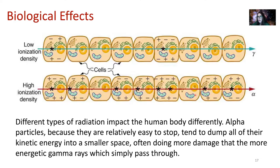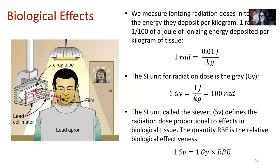Alpha particles can actually do more damage to human tissue than gamma particles. In the medical community, ionizing radiation doses are measured in terms of the energy they deposit per kilogram. One rad is one one-hundredth of a joule of ionizing energy deposited per kilogram of tissue — so one rad equals 0.01 joules per kilogram.